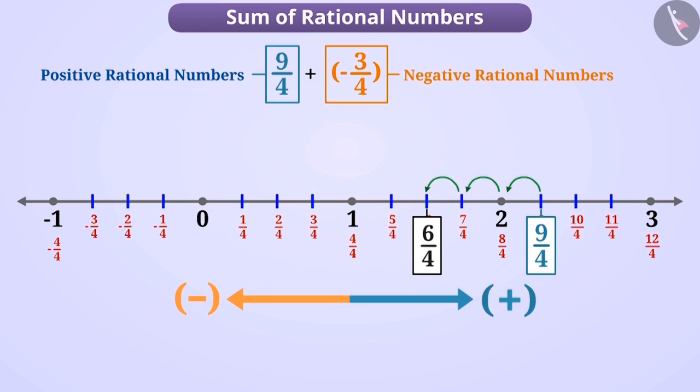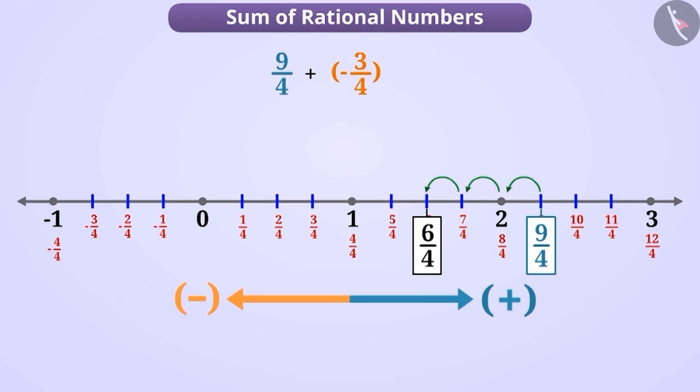With this, we will reach the number 6 by 4. Therefore, 9 by 4 plus minus 3 by 4 is equal to 6 by 4.